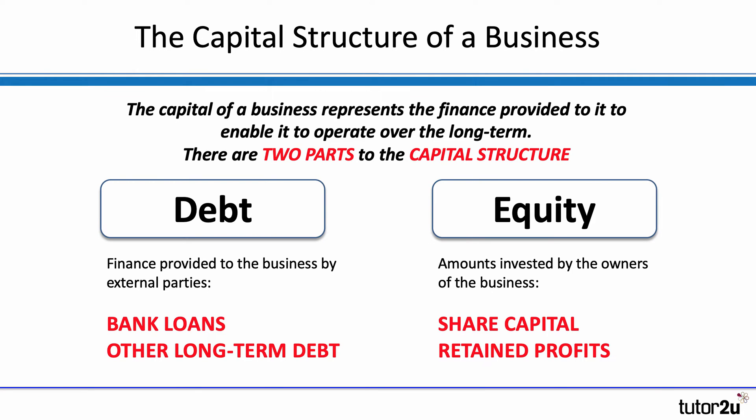The kinds of long-term finance sources which are debt include bank loans and other kinds of long-term debt, such as debentures. Bank loans are the main one.